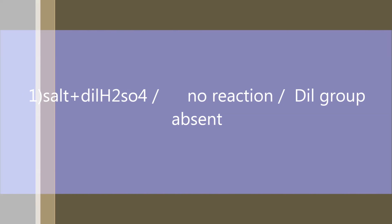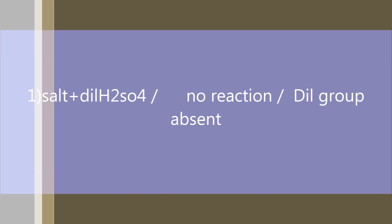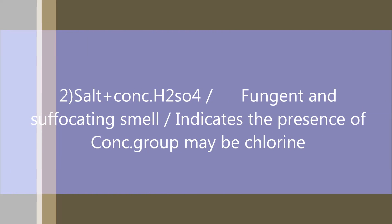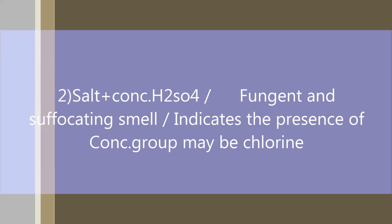We have three columns: experiment, observation, and inference. In the first experiment, salt plus dilute H₂SO₄ — we observe no reaction, and the inference is that the dilute group is absent.